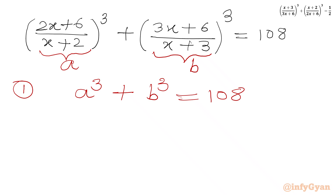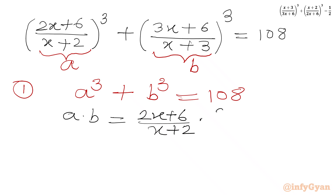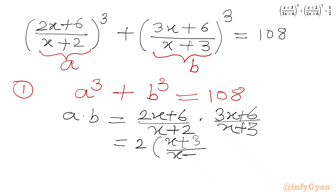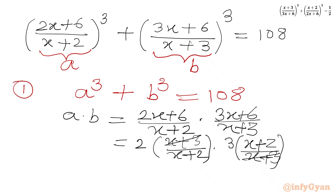Now we will calculate a times b. This will be equal to 2x plus 6 over x plus 2, times 3x plus 6 over x plus 3. We can write 2 times x plus 3 over x plus 2, times 3 times x plus 2 over x plus 3. The x plus 3 and x plus 2 factors from numerator and denominator cancel, and we get 2 times 3 equals 6. So a times b is 6.